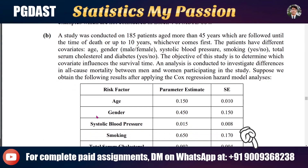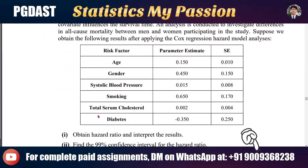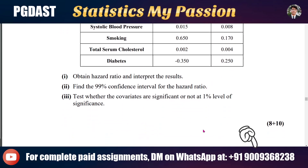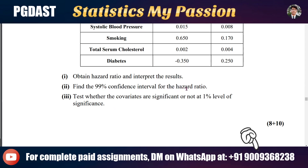After applying the Cox regression hazard model analysis, we obtain hazard ratios for covariates including age, gender, systolic blood pressure, smoking, total serum cholesterol, and diabetes. We need to interpret the results, find the 99% confidence interval for the hazard ratio, and test whether the covariates are significant at the 1% level of significance.